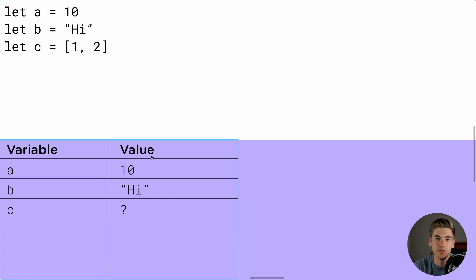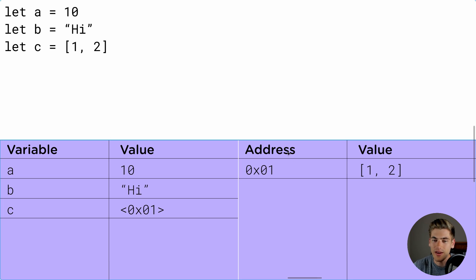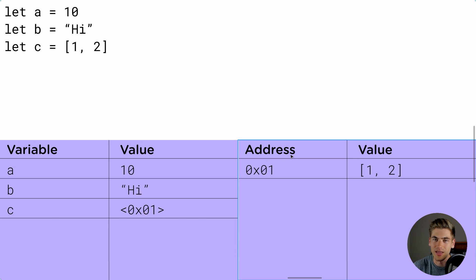Now let's move on to the scenario where we're setting c to an array. What is c's value going to be? You would think it would have the value of the array [1, 2], but actually with JavaScript, arrays and objects — essentially anything that's not a primitive type like string, number, boolean — those are going to be passed by reference. So instead, you're going to be storing a reference to that object inside the value. The value for c is actually just a memory address. Someplace inside the memory of your computer, you're going to have an address — let's say 0x01 — and it has the actual value of that array [1, 2]. C just stores a reference to that memory address.